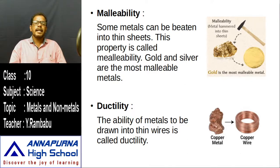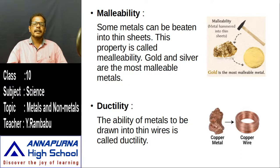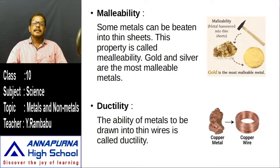This property of forming thin sheets is called malleability, and it differs for different metals. Gold and silver are the most malleable metals — just one gram of gold can be molded into a very large sheet.